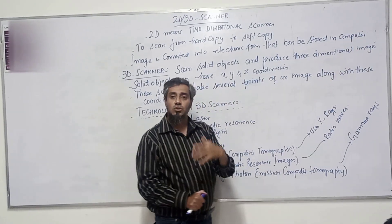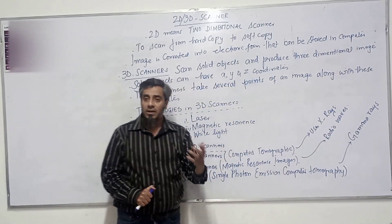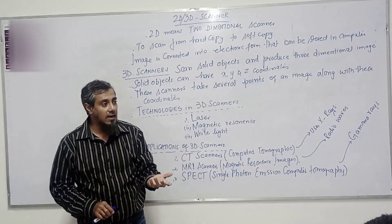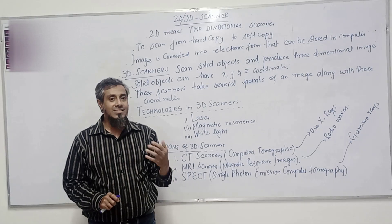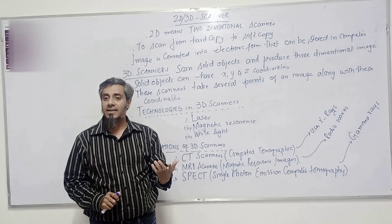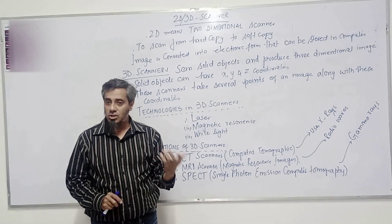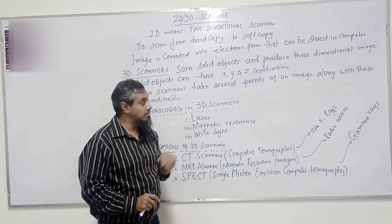Once the image has been stored in the computer, it will be in a digitized form — that is 0s and 1s form.